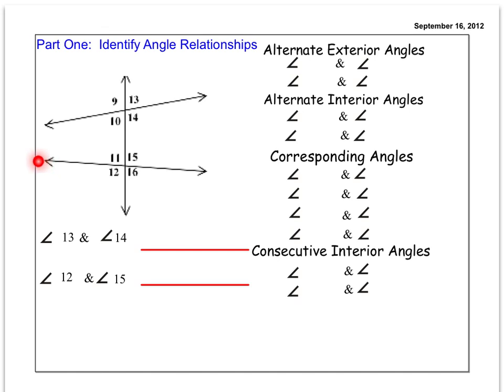So again we're looking for an angle pair opposite sides of that vertical transversal and outside of the horizontal lines. So I see 9 and 16 as a pair and I also see 13 and 12 as a pair. They are outside of the horizontal lines and on alternate sides of the transversal.